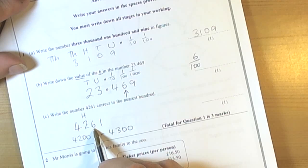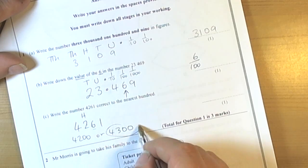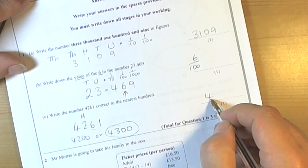Well, we look at the next place value on and that's over the halfway to the next hundred up. So it's over 50. So we're going to go to 4,300 as the answer here.